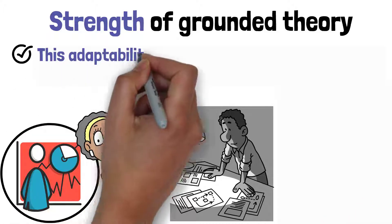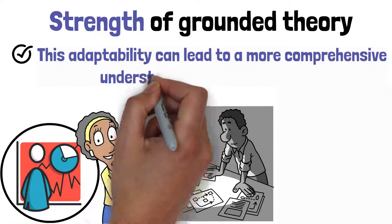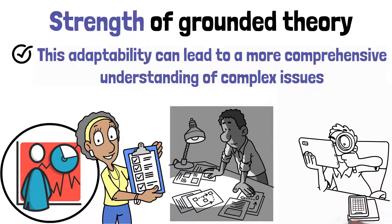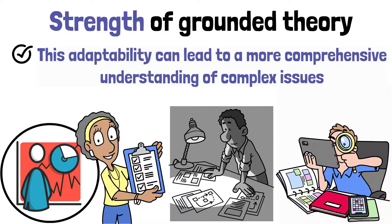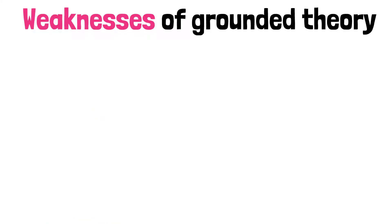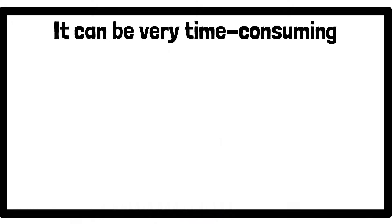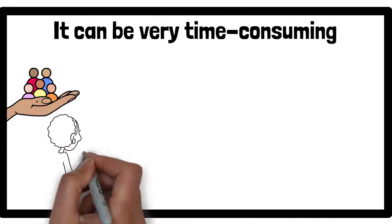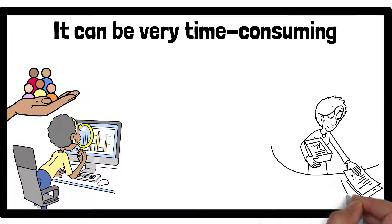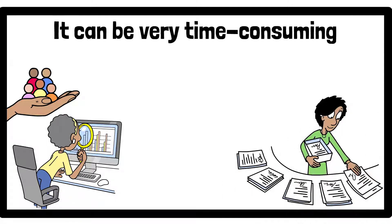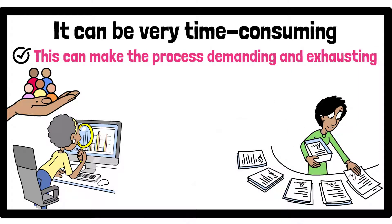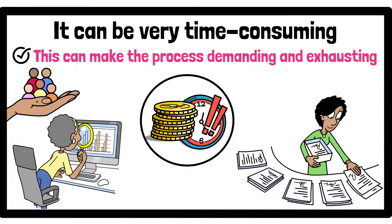This adaptability can lead to a more comprehensive understanding of complex issues, as researchers can focus on areas that become significant as the study progresses. Grounded theory does have some weaknesses that researchers need to consider. It can be very time-consuming because it requires collecting and analysing a large amount of data, which involves detailed work and careful attention to ensure accuracy. This can make the process demanding and exhausting, especially for studies with limited time or resources.